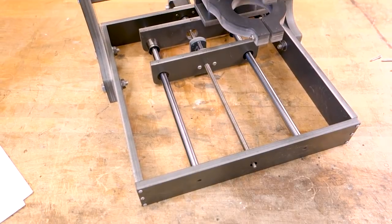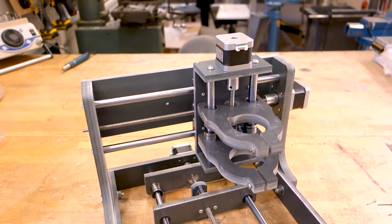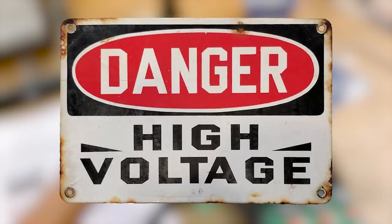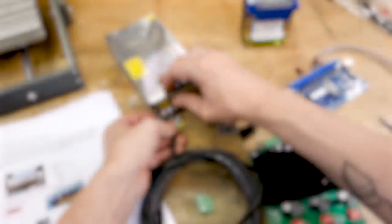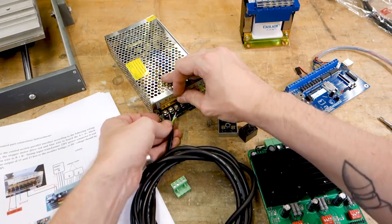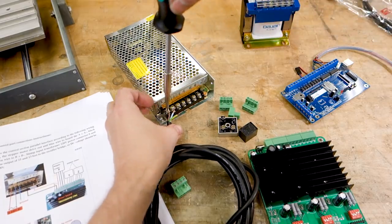With all the moving parts assembled, and all the easy stuff out of the way, let's move on to the slightly more complicated electronics. First things first, if you're uncomfortable playing around with AC power, do not build this mill. Connecting the electronics will require you to strip 110 or 220 volt cables to power both the power supply and the transformer for the spindle.